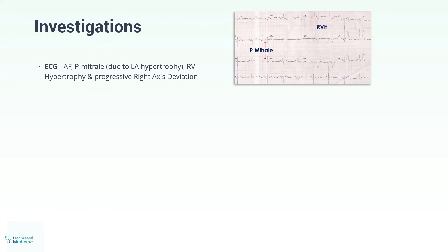Investigations. ECG may show AF, P-mitrale due to left atrial hypertrophy, features of right ventricular hypertrophy, and progressive right axis deviation.